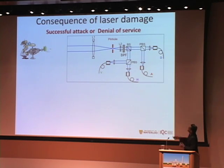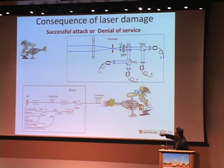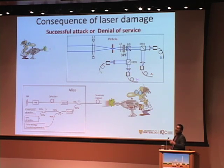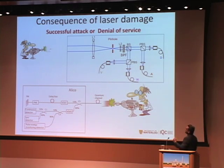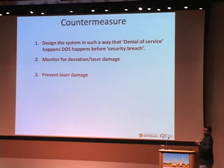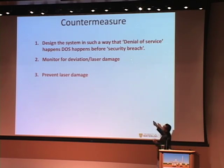Similarly in the second system, because of the coupler ratio (90% then 90%), most light went to the monitoring detector. But if some had reached the single-photon detector it could have burned it and synchronization would have been lost — again a denial of service. This gives us an idea for a countermeasure: we could design the system so that excess laser causes a denial of service before it compromises security. Changing system design in this way is one possible countermeasure.